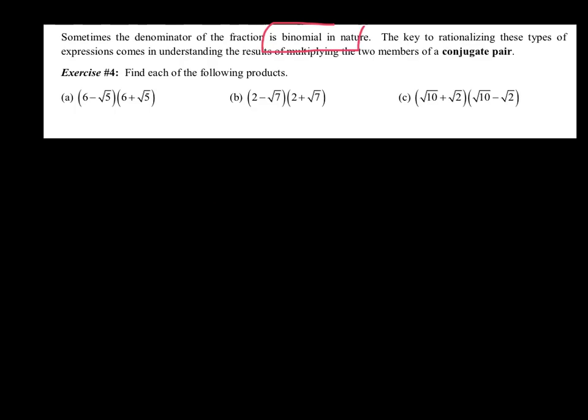Sometimes the denominator for the fraction is binomial — that's the keyword to highlight in your notebook. The key to rationalizing these types comes in understanding the multiplying of two conjugates. We've talked about conjugate pairs before. If I have 6 minus radical 5, its conjugate is 6 plus radical 5, and there's something special that happens.